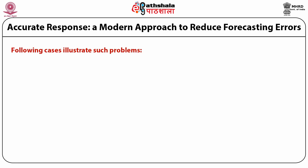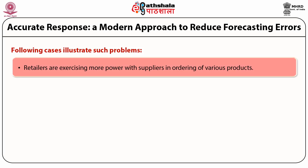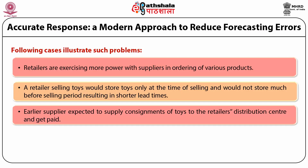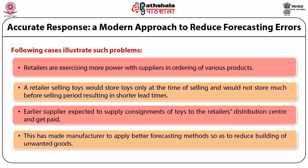Case 1: Retailers are exercising more power with suppliers in ordering various products. A retailer selling toys would store toys only at the time of selling and would not store much before the selling period, resulting in a short lead time. The retailer formulated a policy to purchase toys depending on customer reaction. Earlier, suppliers expected to supply consignments of toys to the retailer's distribution center and get paid. Now, payment is deferred until the actual sale has been made, and remaining toys would be sent back to the manufacturer. This has made manufacturers apply better forecasting methods to reduce the building of unwanted goods.